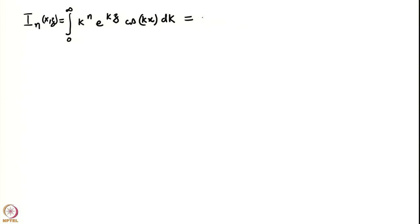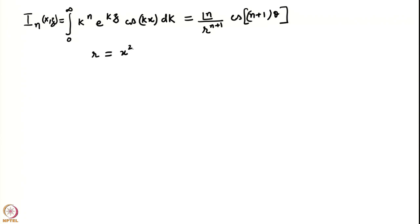The general formula in polar coordinates is of the form: factorial(n) divided by r^(n+1) times cos((n+1)*theta). So we have written the answer in polar coordinates. How did we define r and theta? r is the usual sqrt(x² + z²), and theta is defined slightly differently — it is arctan(x / (-z)).